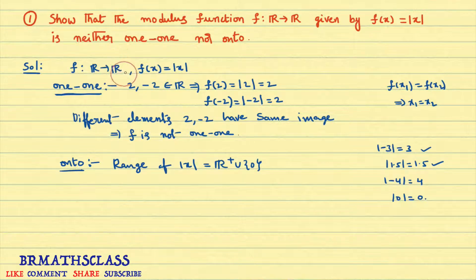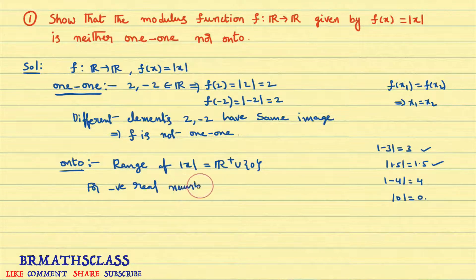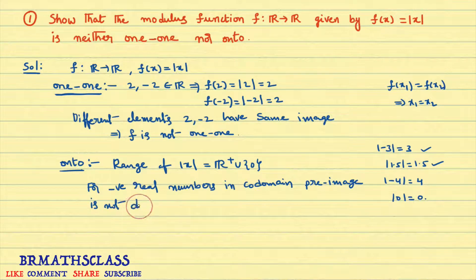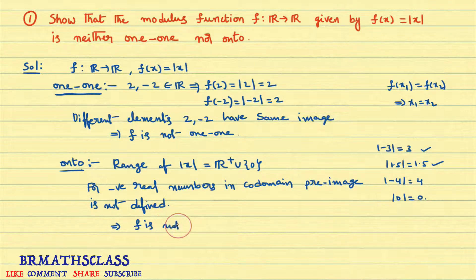Whatever real value you take from the domain, the modulus function maps it to a positive real number or 0. What about negative real numbers in the codomain? For negative real numbers in the codomain, the pre-image is not defined. The definition of onto function says: for every element in the codomain, there must exist at least one pre-image. Since negative real numbers have no pre-image, the function is not onto.